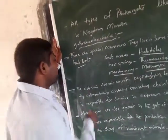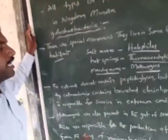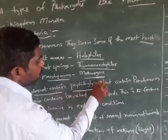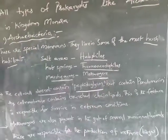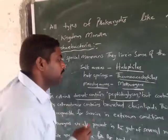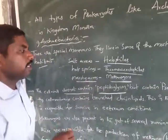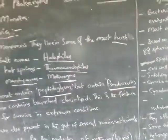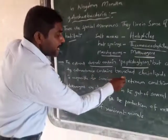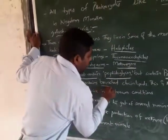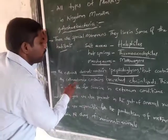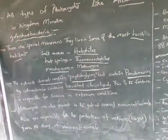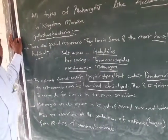The cell wall of archaebacteria does not contain peptidoglycan. Instead, it contains pseudomurine. The cell membrane contains branched chain lipids, which is responsible for their survival in extreme conditions.